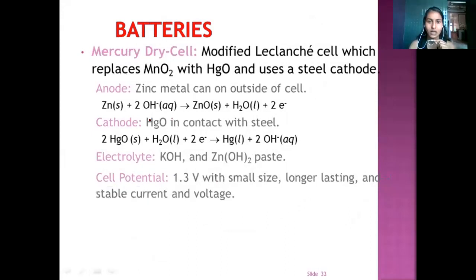Mercury cell, mercury dry cell, is a modified Leclanche cell which replaces MnO2 with HgO and uses steel cathode. At anode, zinc metal is used on outside the cell which forms the reaction as Zn solid plus 2OH gives ZnO plus H2O plus 2 electrons. At cathode, HgO is in contact with the steel. The reaction is 2HgO plus 2H2O plus 2 electrons forms Hg liquid plus 2OH minus ions. Electrolyte used is KOH and ZnOH paste. Cell potential for this cell is 1.3 volt.